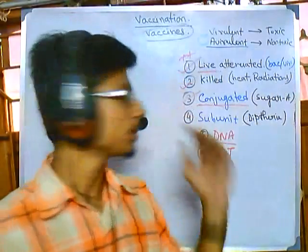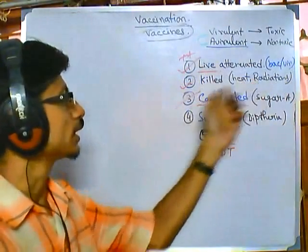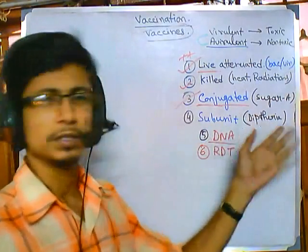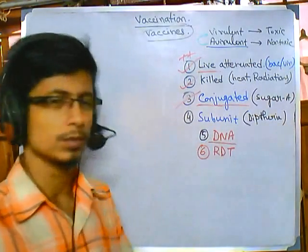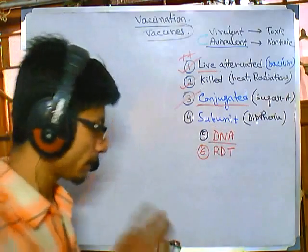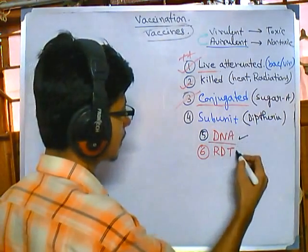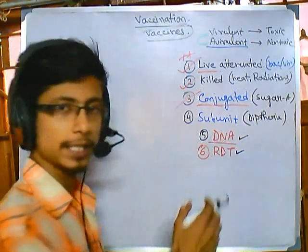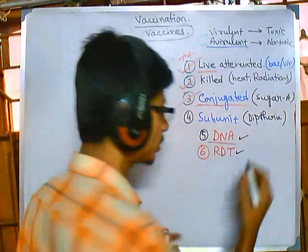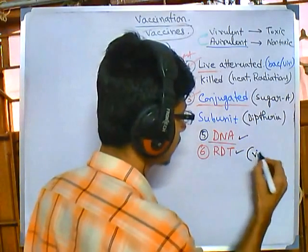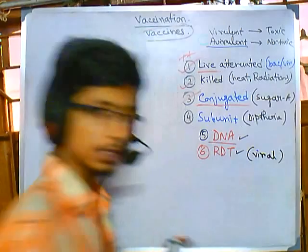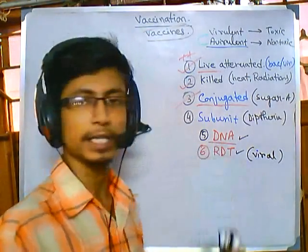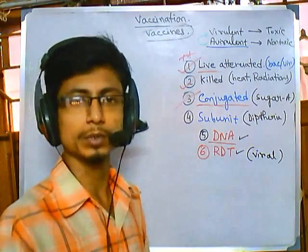We have discussed three types of vaccines: live attenuated, killed, and conjugated. Now we will be talking about DNA vaccines and recombinant DNA technology (RDT) type vaccines — vaccines where we utilize DNA strands and recombinant DNA technology, which is vigorously used for viral-mediated vaccines. We are going to see how viruses can be used as delivery agents for DNA into the host cell to produce an immune response.